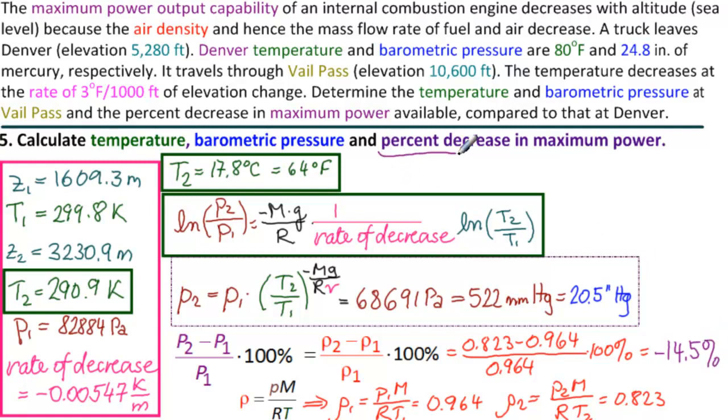So the percent decrease in maximum power is minus 14.5%. So the answer to the last part of this problem is minus 14.5%.